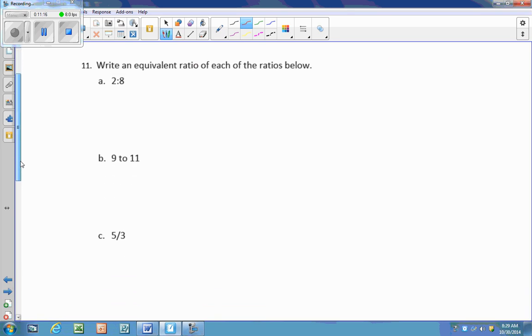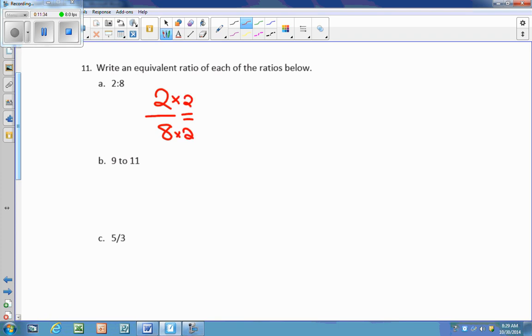Number 11, A, B, and C are all just writing equivalent ratios. So they're asking you to give me another ratio that's equivalent to this. So I'm going to take my ratio, put it into the form of a fraction, and then I'm going to pick any factor that I want to multiply by. So something easy to multiply by would be 2. 2 times 2 is 4, 8 times 2 is 16. And my new ratio would be 4 to 16.